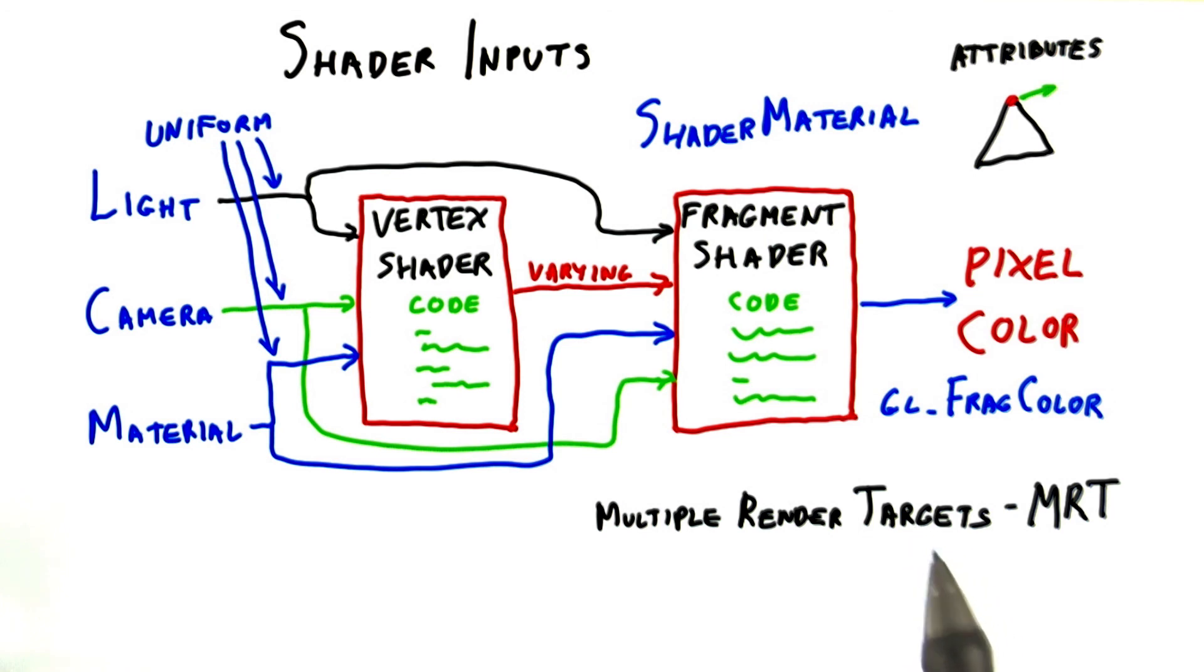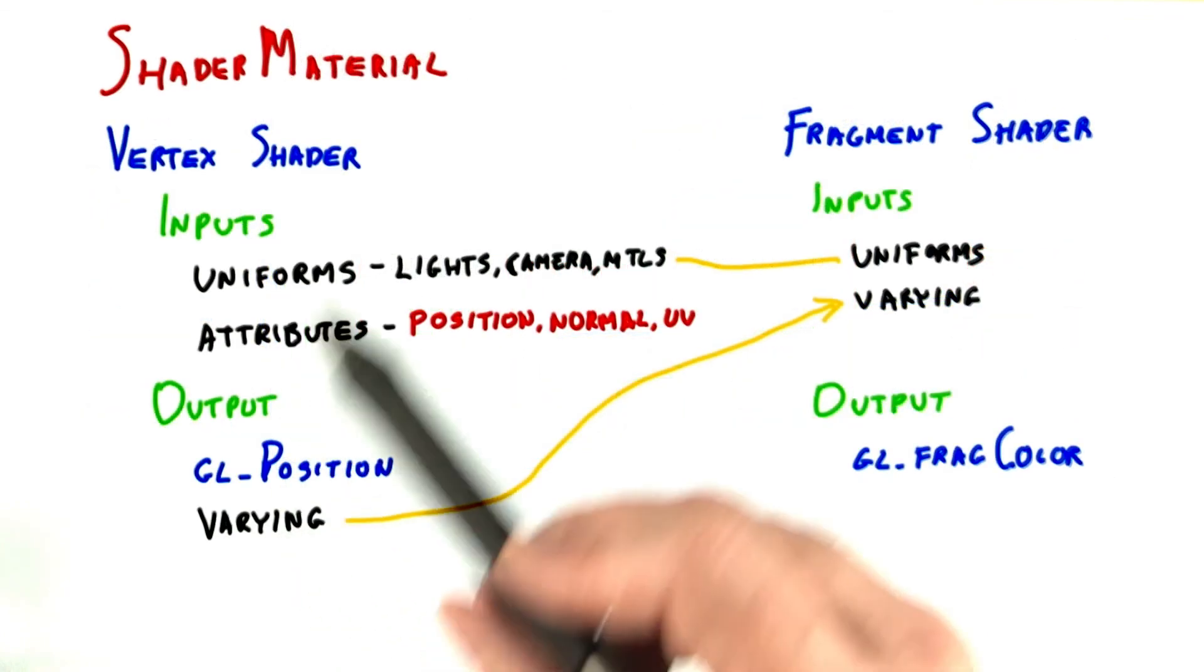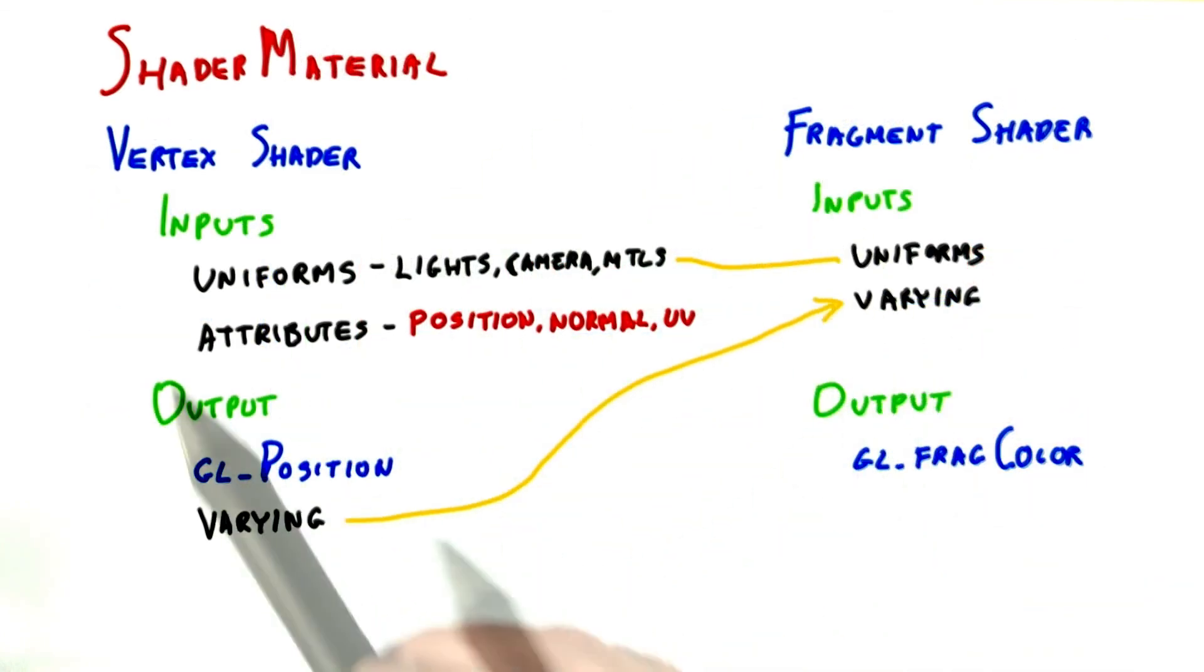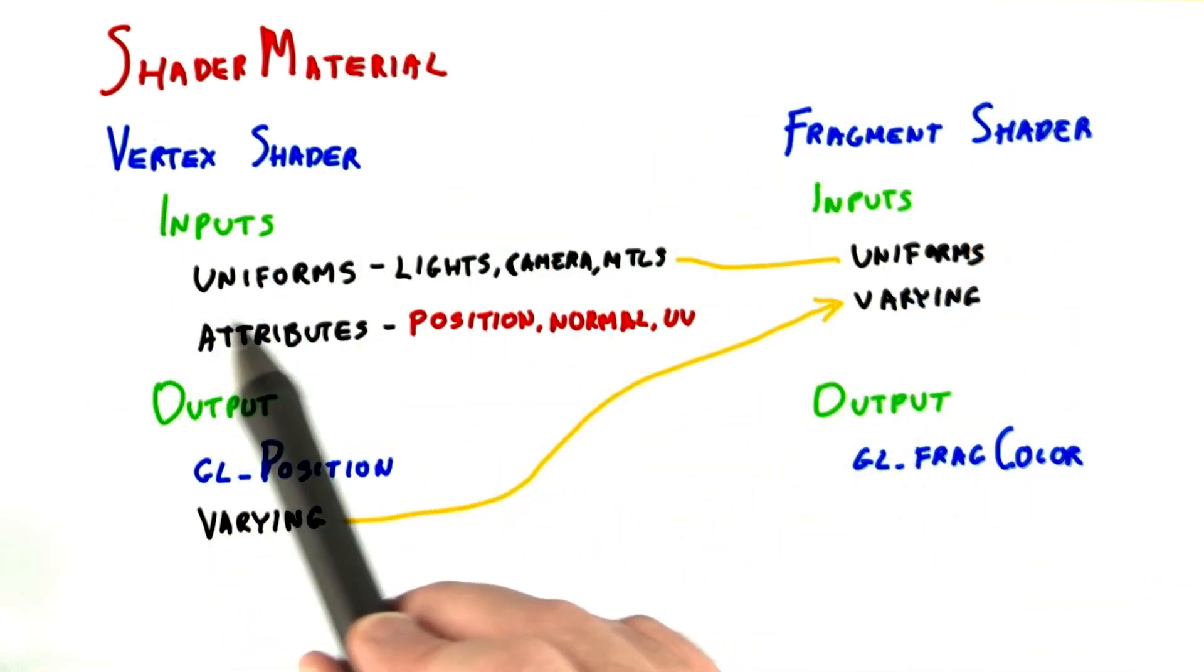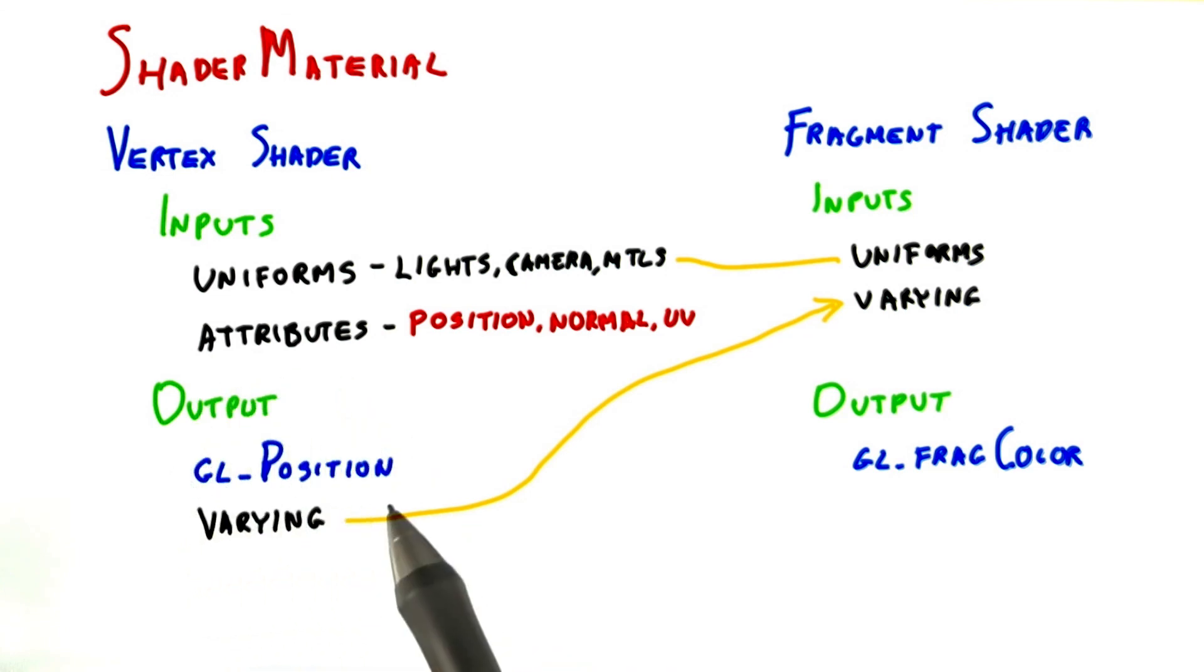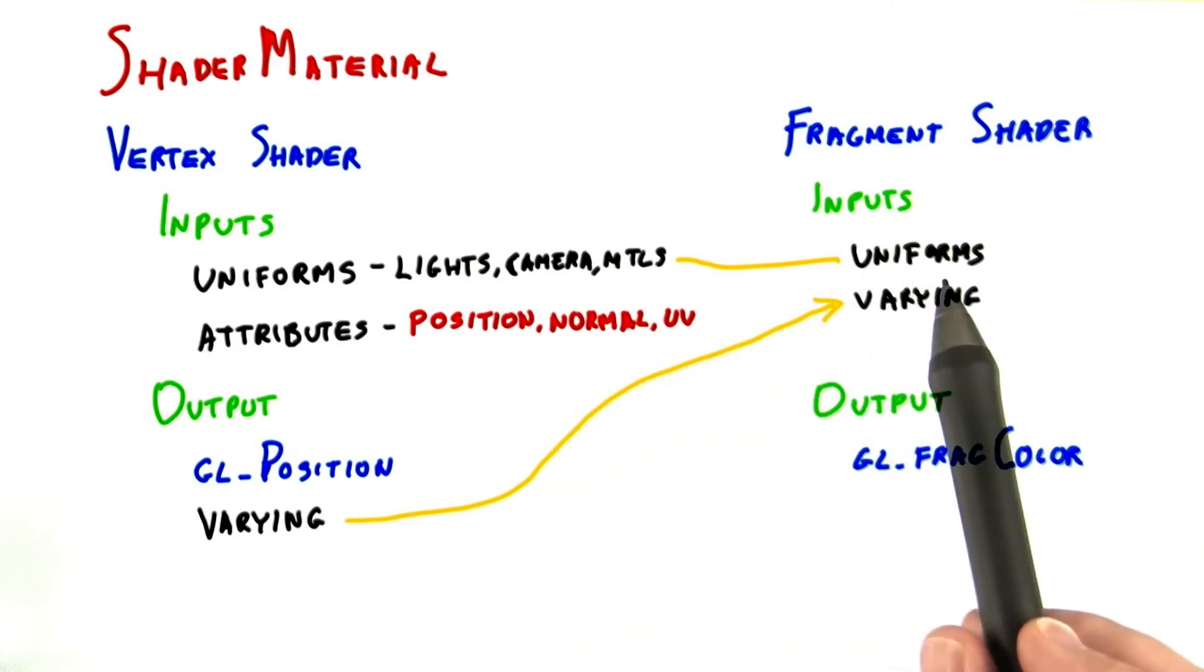Unfortunately, WebGL does not support this yet. To summarize, here's Three.js's view of the world: A vertex shader has inputs that are uniforms and attributes, and always outputs a gl_position and can output varying values. The fragment shader takes these varying values, along with whatever uniforms it wants, and outputs a gl_FragColor.